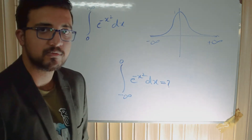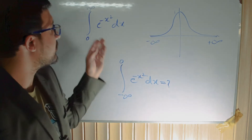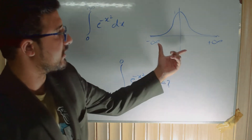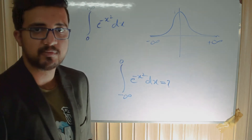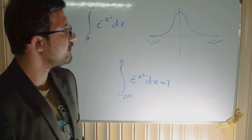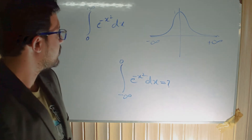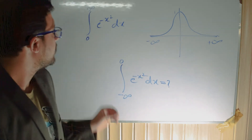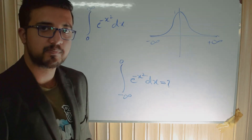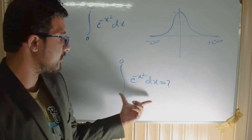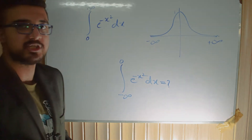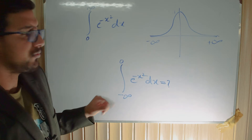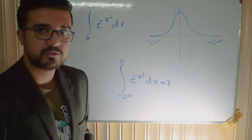Here is the graph of our function e to the power minus x squared. You can see that the function is an even function. Now we want to evaluate the integral from minus infinity to 0.